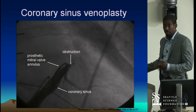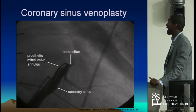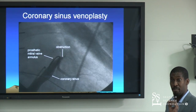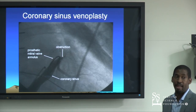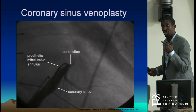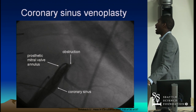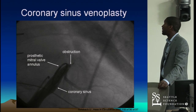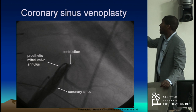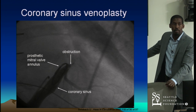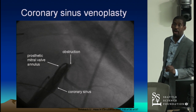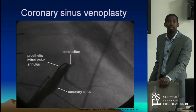Coronary sinus venoplasty sometimes comes into play — Seth Worley and Kevin Jackson are now national thought leaders on this. Using standard angiography and interventional techniques, they can balloon through narrowed areas. In rare cases where a kink or stenosis prevents lead tracking over the wire, there is a limited role for venoplasty. When the quad lead came out it reduced the need, but there's still a role for bringing patients back to plasty open a stenosis to get the lead to a certain spot.